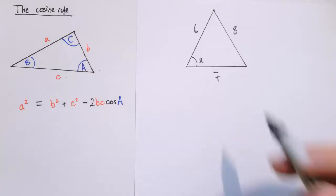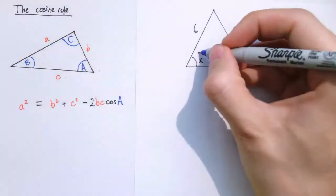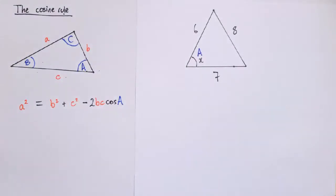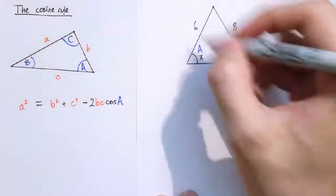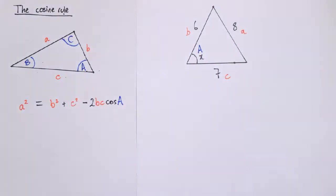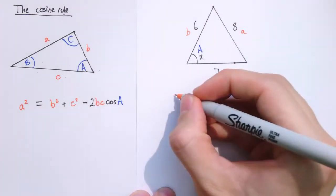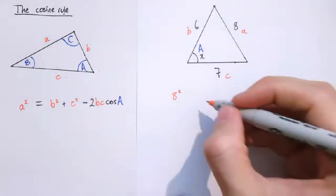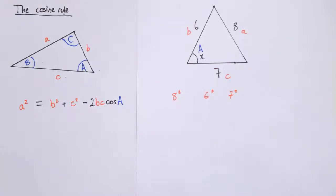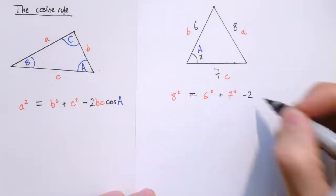So for example, here's a problem. I've got a triangle with side lengths of 6, 7 and 8, and I'd like to work out what the angle x is. Our angle x in the formula corresponds to capital A, so that means we will call this length 8 side a. It doesn't matter which of these we call b and c — it's not going to make any difference at all in the formula. So substituting into the formula: a is 8, so I get 8 squared; b is 6 and c is 7, so that's 6 squared and 7 squared.